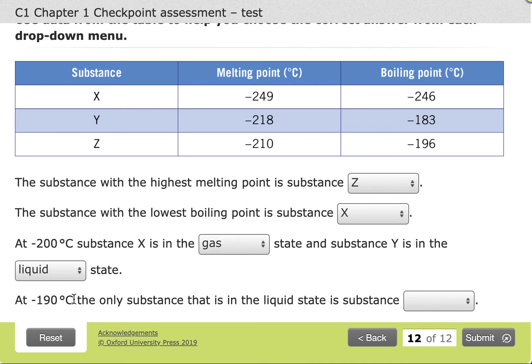Last one is a good one. It's tripped me up before. For minus 190, we want to look at the only substance which is in the liquid state. We take our minus 190 and we say, where does minus 190 lie on our scale?